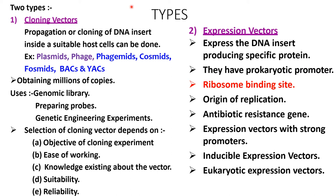There are two types of vectors: cloning vector and expression vector. In case of a cloning vector, it is used for the propagation or cloning of DNA insert inside a suitable host cell. Examples include plasmid, phage, phagemid, cosmid, phasmid, BAC, or YAC. Here, millions of copies of the DNA insert will be produced.